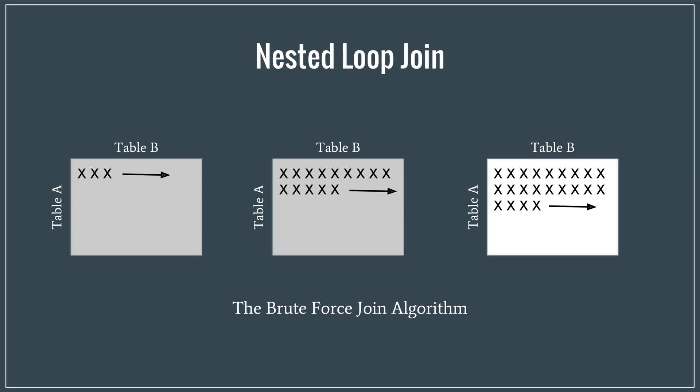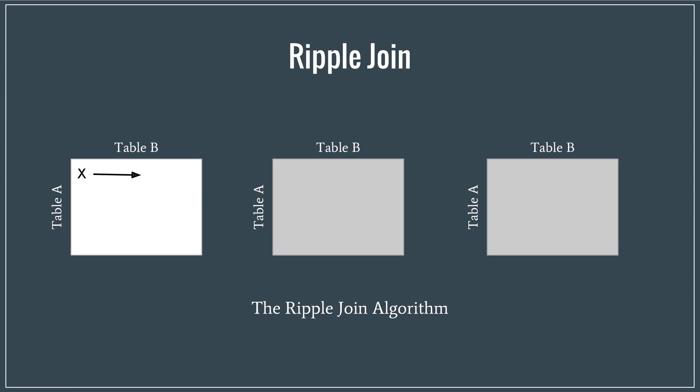if table B had an unusually large size, it would hinder an on-the-fly evaluation of the joint. Instead, if we sweep the plane like ripples in a pond by drawing samples from both tables one step at a time and checking for joint results, we will get a much better real-time estimate of the aggregate function.